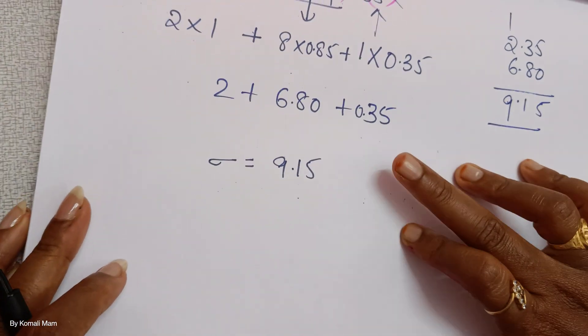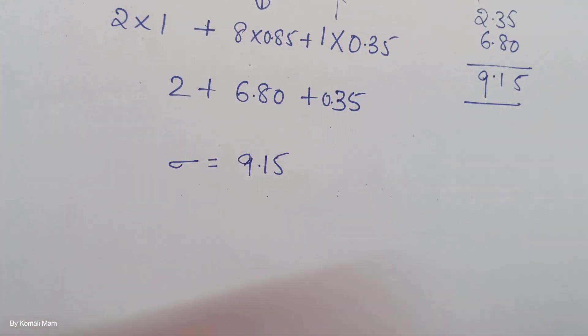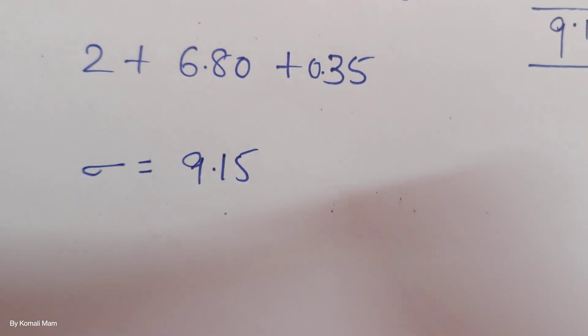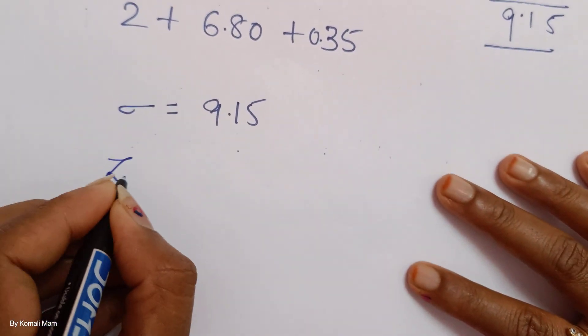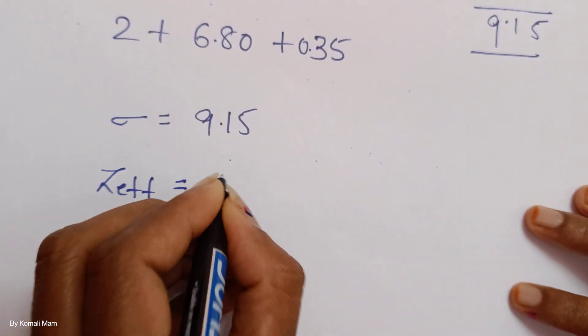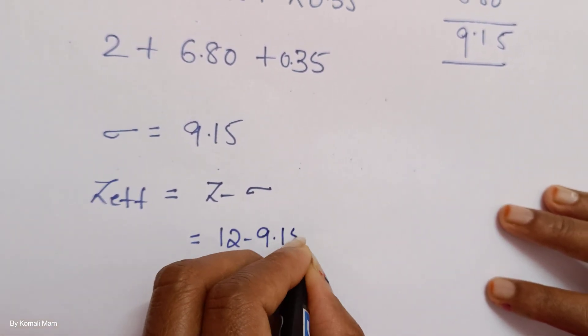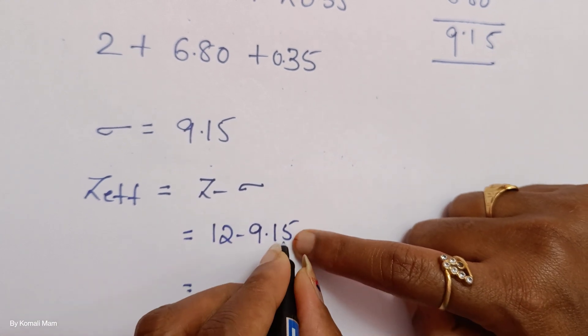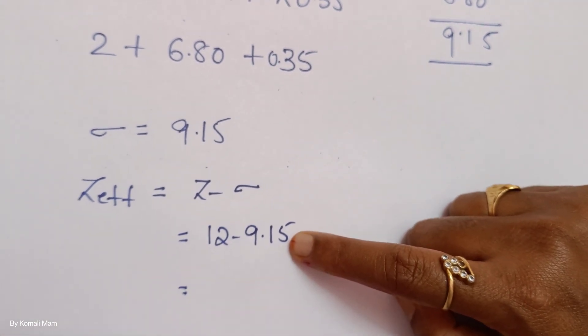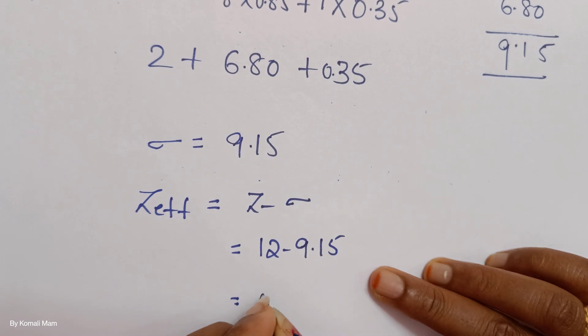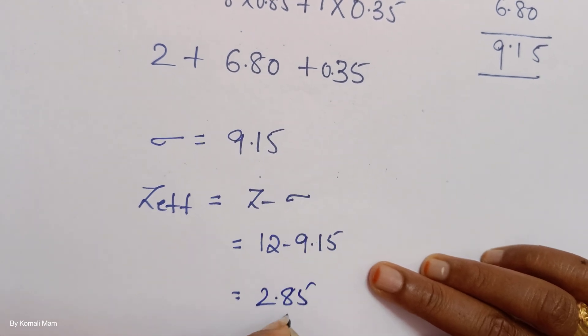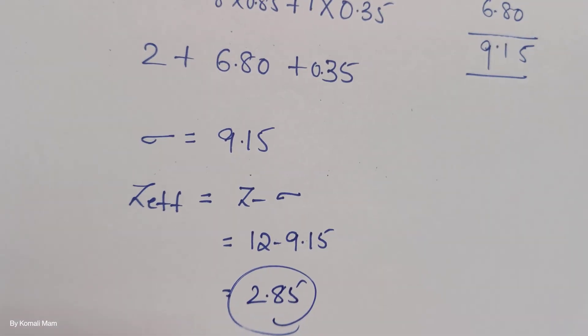Is it clear? Now once you got the sigma value, what you have to do, students? You should count the Z effect. What is the formula? Atomic number minus sigma. So 12 minus 9.15. So here 7. So 2.85. This is for magnesium. Got the correct answers?